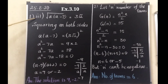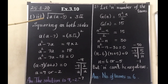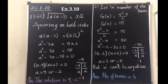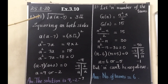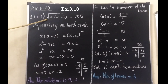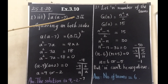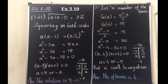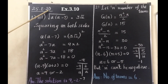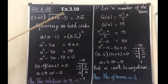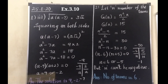The third subdivision says: find the solution for this equation. The equation is given in a different format — the square root of a(a minus 7) is equal to 3 root 2. It is given in square root format. So what we have to do is: squaring on both sides.